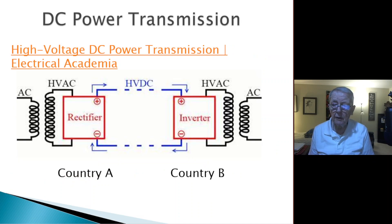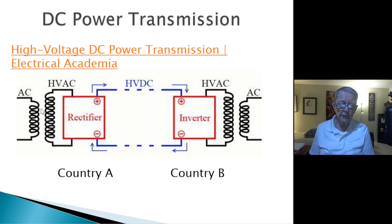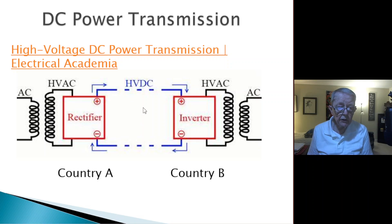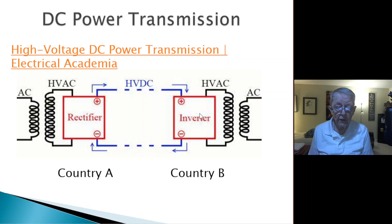Let's talk about DC power transmission. It's not used much in this country, but it is used in others. In this symbolic diagram, you have a transformer at the beginning that takes AC and converts it to high-voltage DC. This is the transmission line, and at the other end you have an inverter which creates the AC back again.